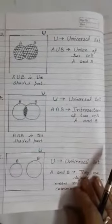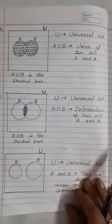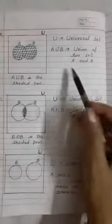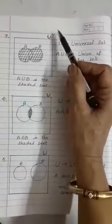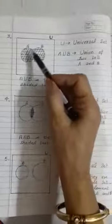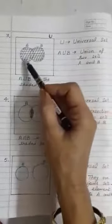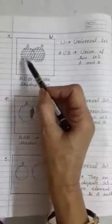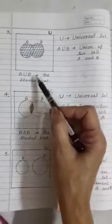Now next, you can see here A union B. A union B means combined A and B. You see here U is a universal set which is in the form of a rectangle. These are two sets, they are intersecting each other also, and when we combine all the elements of A and B, that is called A union B.